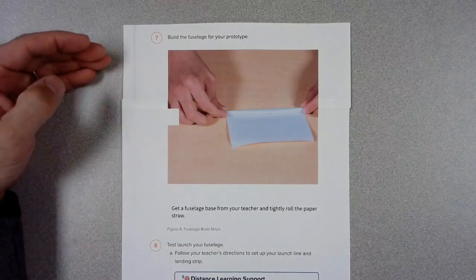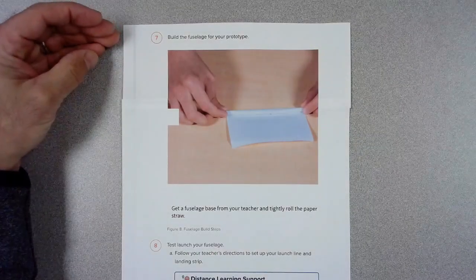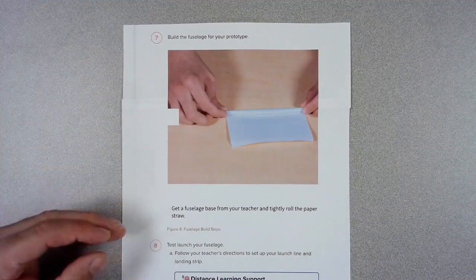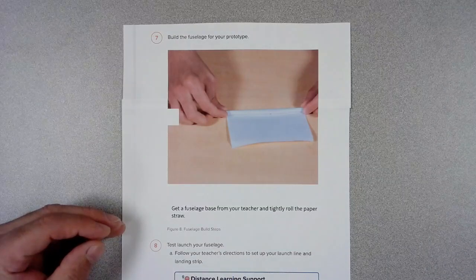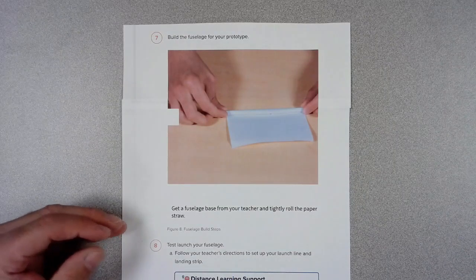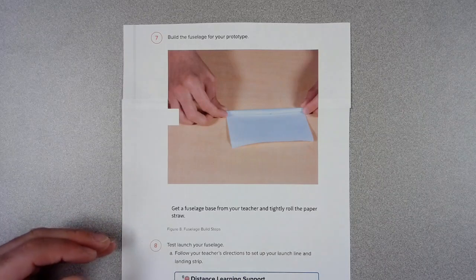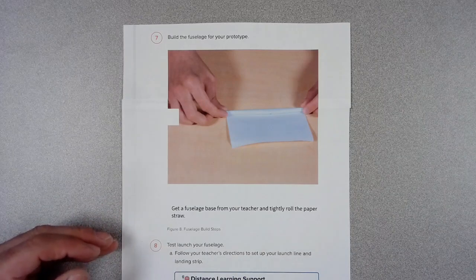Within the activity it says on step number seven you need to build the fuselage for your prototype. And it says to get your materials from your teacher and roll the paper around a straw, but it doesn't give you a whole lot of information. So my video is going to show you some hints on trying to make that go a little bit smoother.